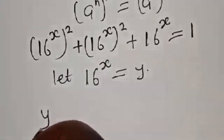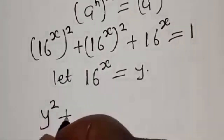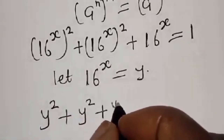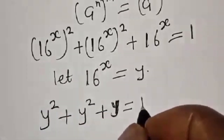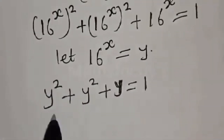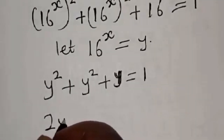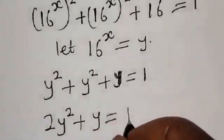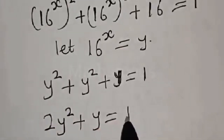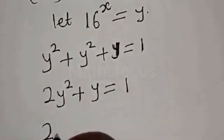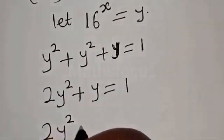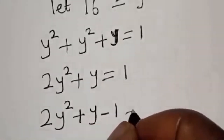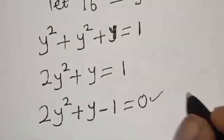Now let 16 raised to power s equal y. Then we have y squared plus y squared plus y is equal to 1. That gives us 2y squared plus y is equal to 1. Bringing the 1 to the left side, we have 2y squared plus y minus 1 is equal to 0. This is a quadratic equation.